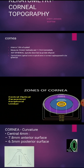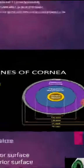The anterior one-sixth of the eyeball is the cornea. The diameter of the cornea vertically is about 10.6 millimeters and horizontally is about 11.7 millimeters. Its shape is a prolate ellipsoid, and the central 4 millimeters of the cornea is the most important area because it is the very sensitive part of the cornea.